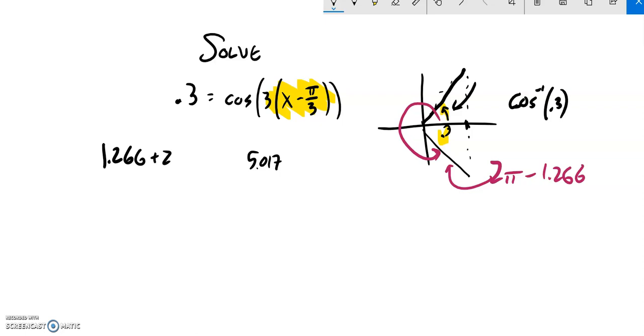5.017 is my other angle, and any full rotation of those, so those multipliers of 2π times n. Notice each of these is equal to this. So this is equal to that, and this is also equal to that.